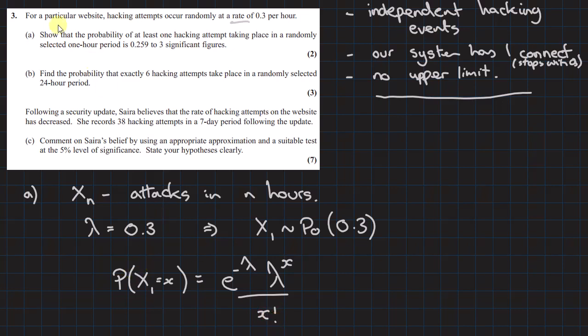So the Poisson calculation is P(X=x) equals e to the minus lambda, lambda to the x over x factorial. What we're trying to find is the probability of at least one attacking event, so we're looking for P(X1≥1). The calculation here is 1 minus P(X1≤0).